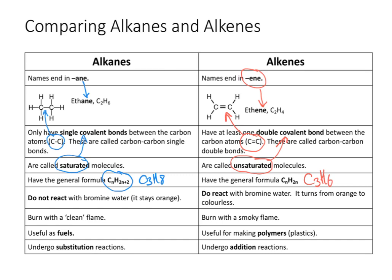Alkenes do react with bromine water, and they turn bromine water from orange to colourless. This is a great, fast, simple way to find out if you've got an alkane or an alkene: add bromine water — if it goes from orange to colourless it's an alkene; if it stays orange, it's an alkane.